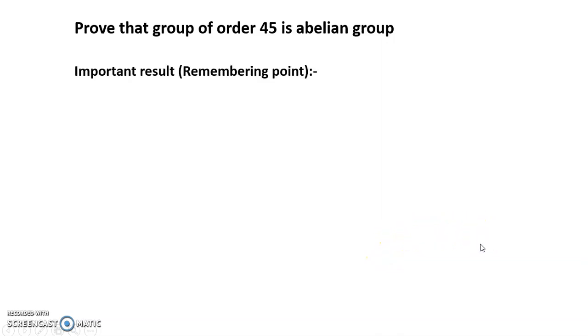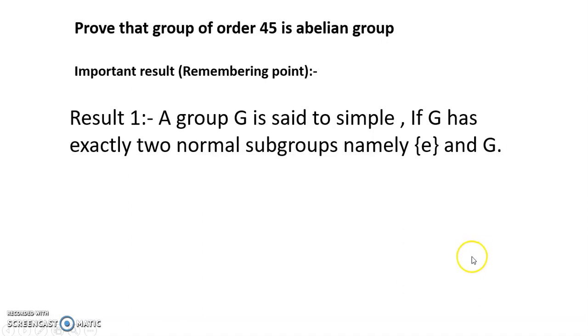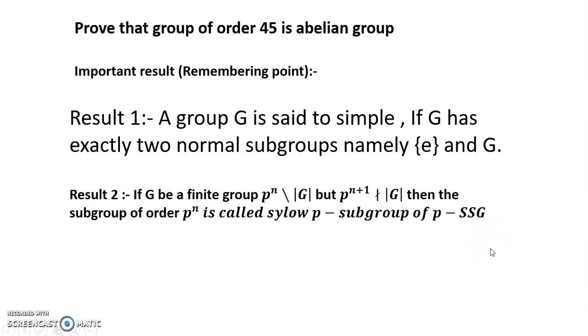Important result, remembering point: Result 1 - A group G is said to be simple if G has exactly two normal subgroups, namely {e} and G. Result 2 - If G be a finite group p^n divisible...